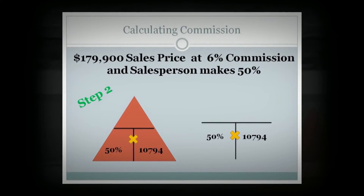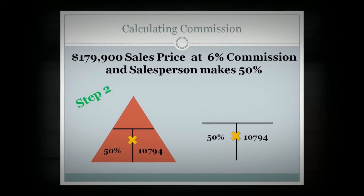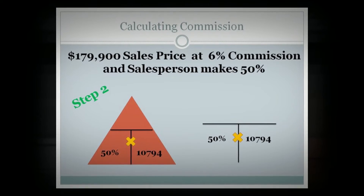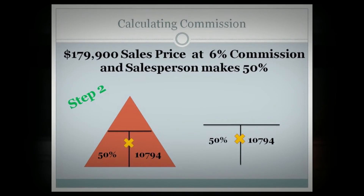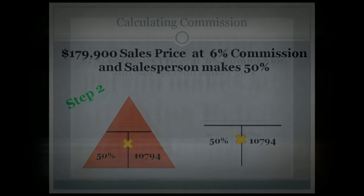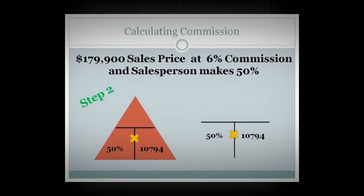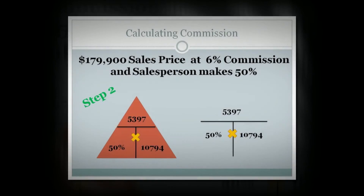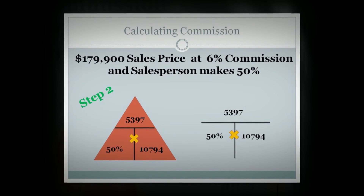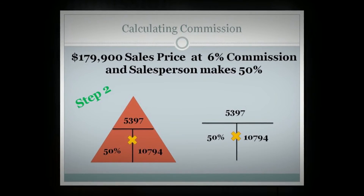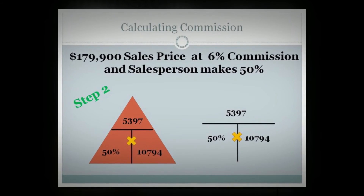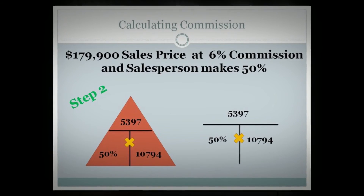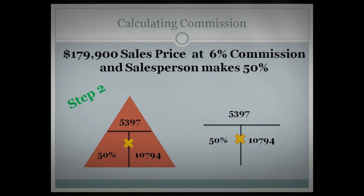Then you perform step two with your second T or triangle. You put the $10,794 as the total commission in the bottom right-hand, put 50% in the bottom left-hand, and multiply those two together to give you an amount of $5,397 as the amount that the salesperson made.